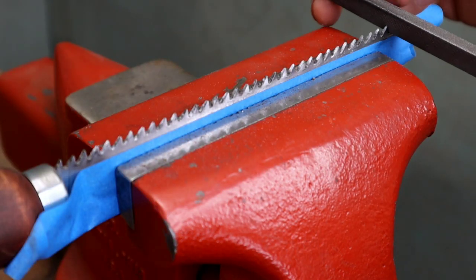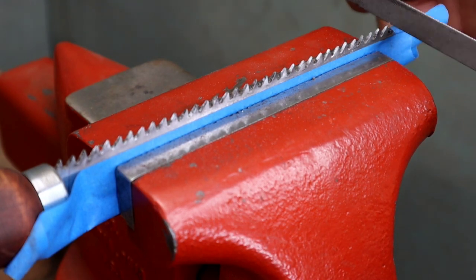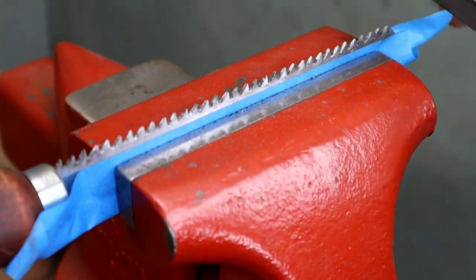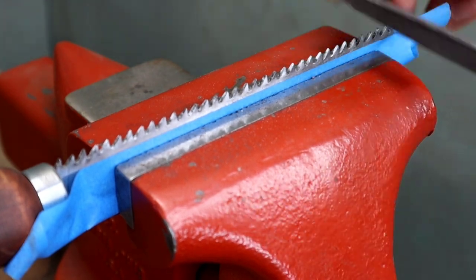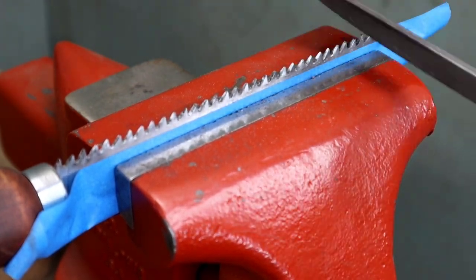Start with the file flat for the first 7 to 10 teeth, meaning perpendicular to the blade. For the next set of teeth, lean the file slightly forward because these teeth are going to do the bulk of the cutting and you want a more aggressive angle on them.